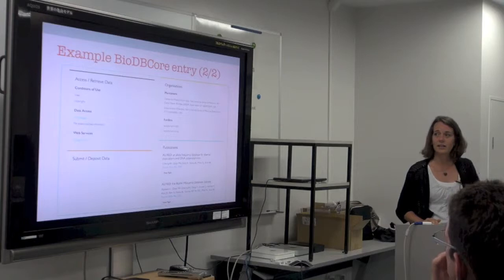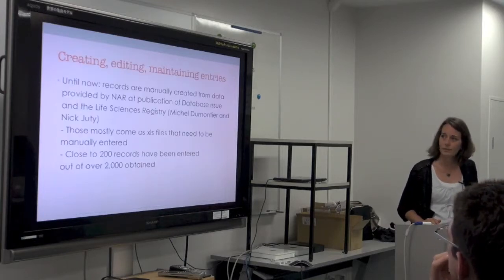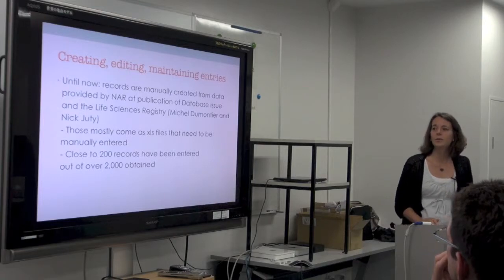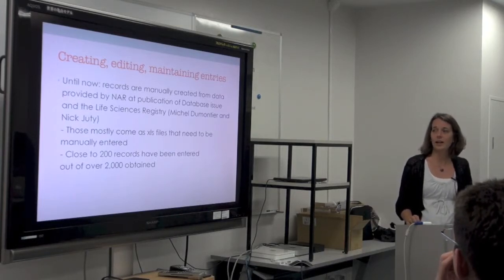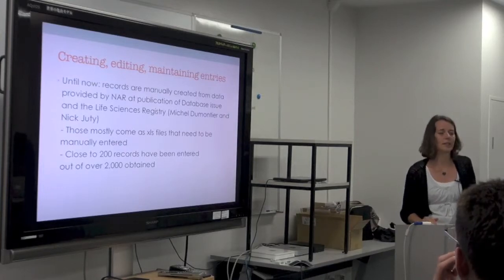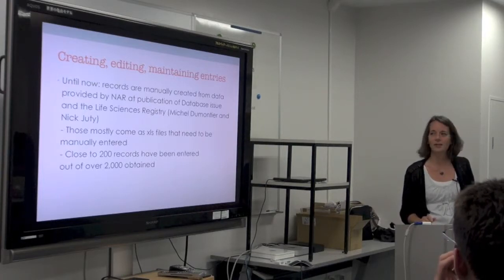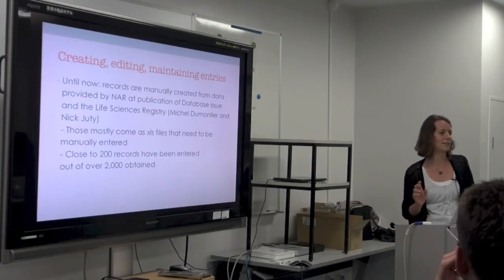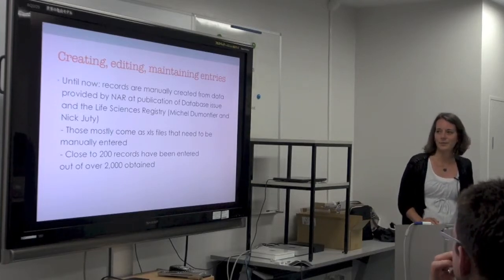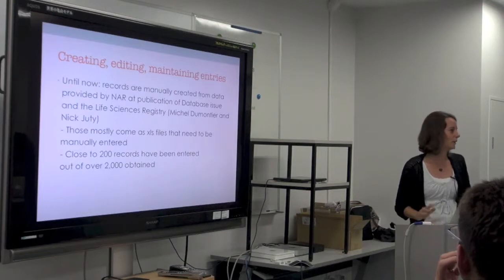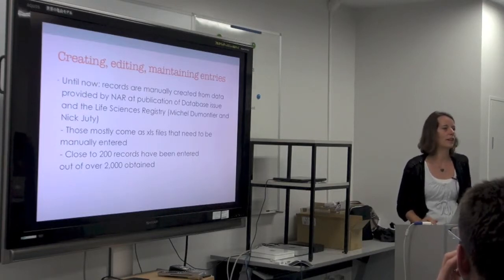These are all the fields discussed before. What we've done until now is manually create records from data provided by Michael Galperin and also as Philippe started entering some entries from the life science registry. We haven't made enough progress, and before going through about 2,000 entries manually — which didn't seem like the best solution — we wanted to think about the best way forward. We've entered perhaps 10% of what we have, and even that is a small fraction of what's out there.